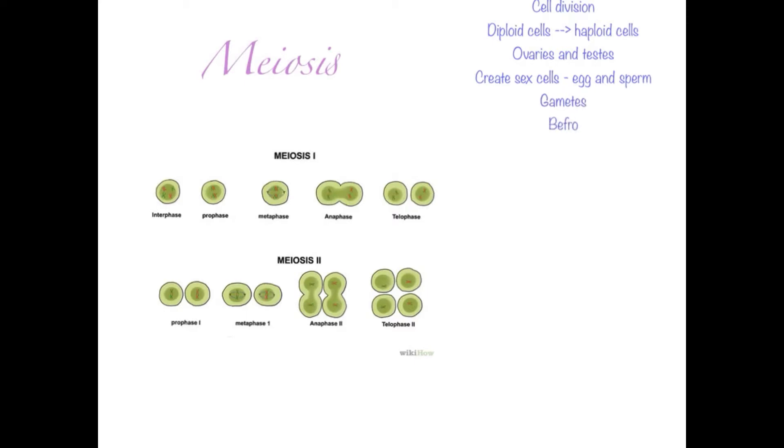It happens before fertilization takes place, as obviously we need to make the sperm and the egg before they can come together. It helps to increase genetic variation through two processes known as crossing over and independent assortment, which we'll be having a look at a little bit later. We create four daughter cells which are all unique, unlike mitosis where all the daughter cells were the same.